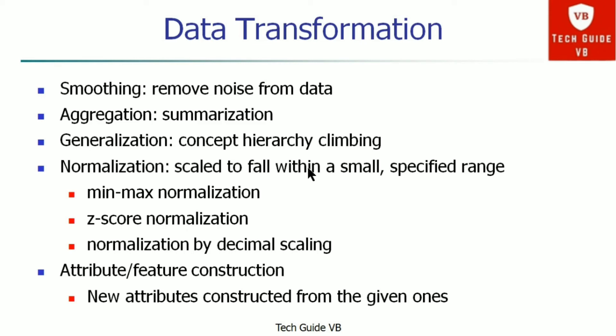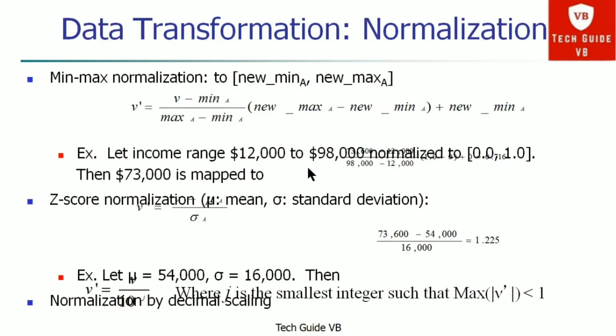The next step is aggregation, which is the summarization of data. Then generalization, which involves concept hierarchy climbing. The fourth step is normalization — scaling data to fall within a small specified range — which includes min-max normalization, Z-score normalization, and normalization by decimal scaling. The last step is attribute or feature construction, where new attributes are constructed from existing ones.